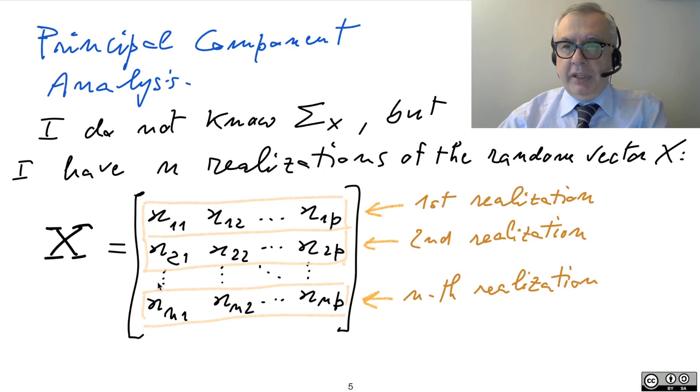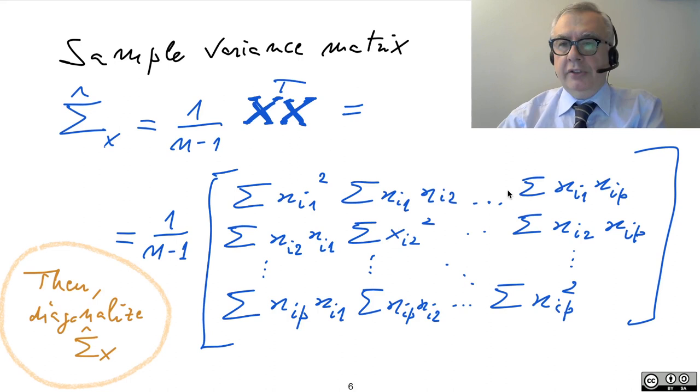So if I compute the mean of the first features, so the mean here, the mean will be zero, and also the mean here for the second feature, and so on. Therefore, the expression of the sample variance and sample covariances is going to simplify, because you don't have to take care of the mean. And then, you can go. You just diagonalize this matrix, and you can proceed as before.